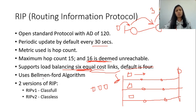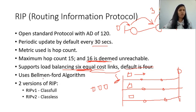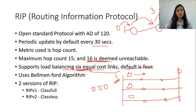RIP uses the Bellman-Ford algorithm to calculate the shortest path. RIP comes in two versions: RIP version 1 and RIP version 2. RIP version 1 is used for classful networks, whereas RIP version 2 supports classless networks. Also, RIP version 1 does not support authentication, whereas RIP version 2 supports authentication and uses MD5 for authentication.